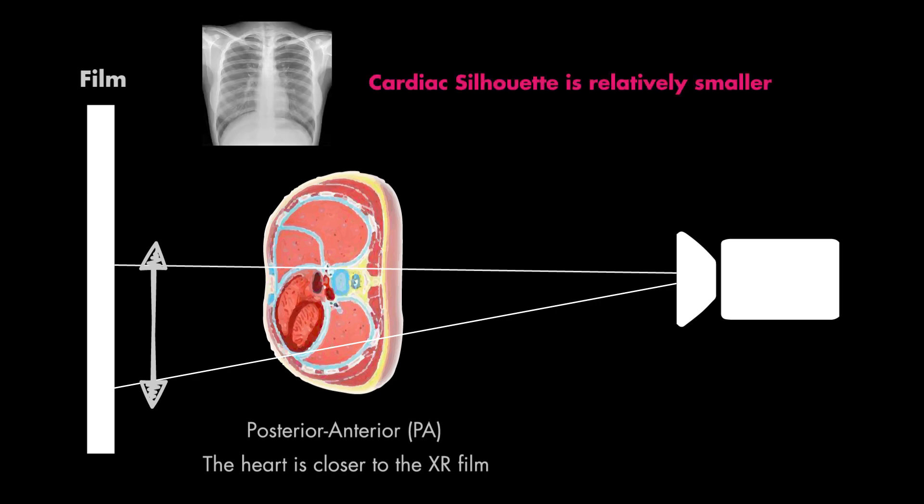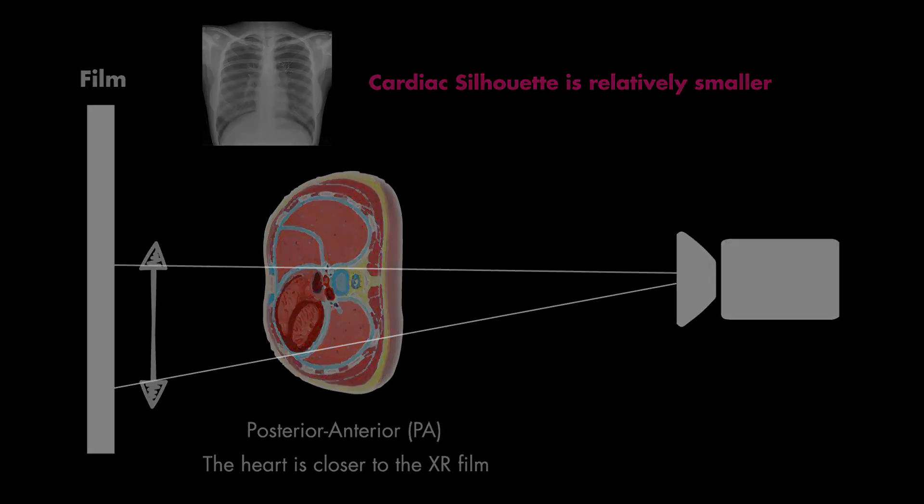Therefore, heart size is most accurately assessed on a PA film. This is important when knowing the size of the heart is essential, such as in the case of a pericardial effusion or other cases of cardiomegaly you may see on chest x-ray.